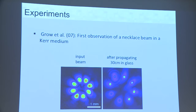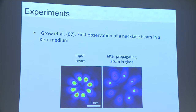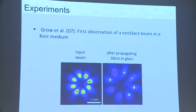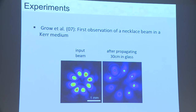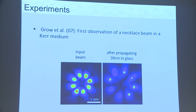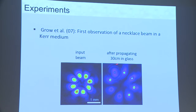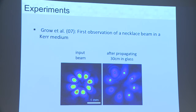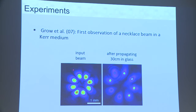An experiment confirming this came eight years later, done at Cornell by Gaeta's group. They showed an input necklace beam with opposite phases, and after propagation of 30 centimeters in glass, the necklace structure is preserved. Whether this counts as stability depends on whether you're a mathematician or a physicist — for a physicist, this is stability.